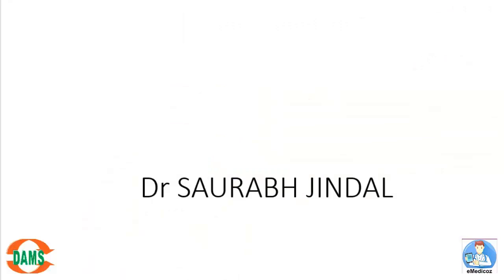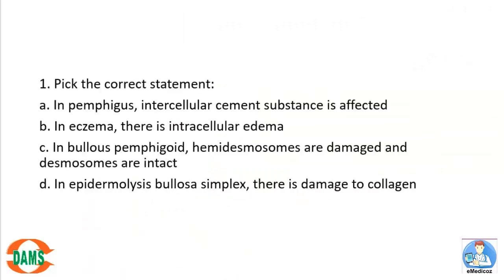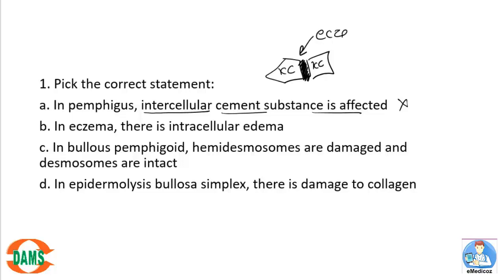Welcome students. Let's look at the first dermatology question: pick the correct statement. In pemphigus, the intercellular cement substance is affected. Second, eczema has intercellular edema. Third, bullous pemphigoid has hemidesmosomal damage and desmosomes are intact. Fourth, in EBS there is damage to collagen. In pemphigus, the intercellular cement is NOT affected — that's wrong. In pemphigus, the desmosomes are affected.